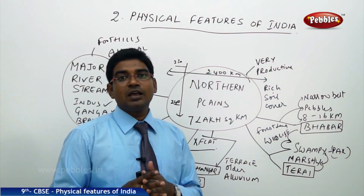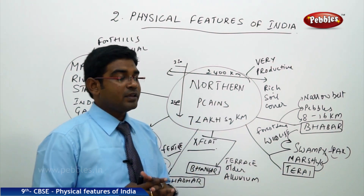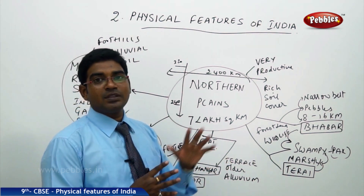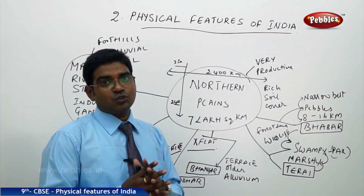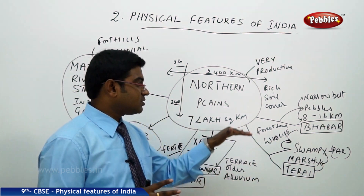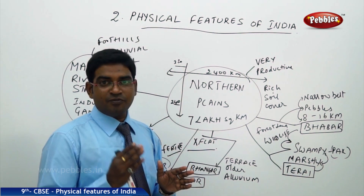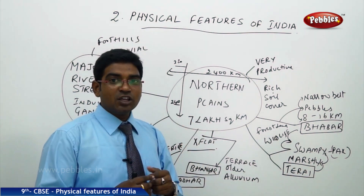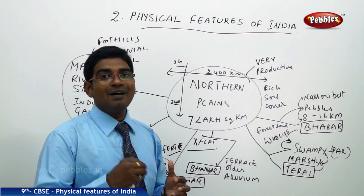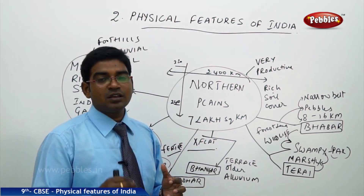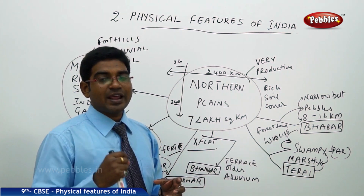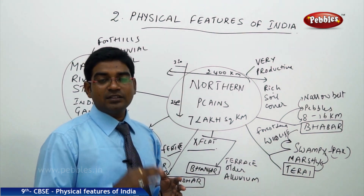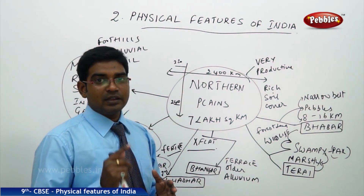When we move down beyond the Bhabar land, the rivers re-emerge from the pebble stones downward after they cross this 16 kilometer width land. They then create a swampy and marshy track, which is a very rough track of land present there. That is known as the Terai land.